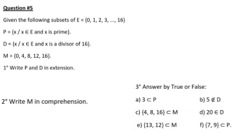And we need to write P and D in extension. P is a prime number, so the prime numbers are 1, 2, 3, 5, 7, 11, and 13. D, it's a divisor of 16, so it's 1, 2, 4, 8, and 16.